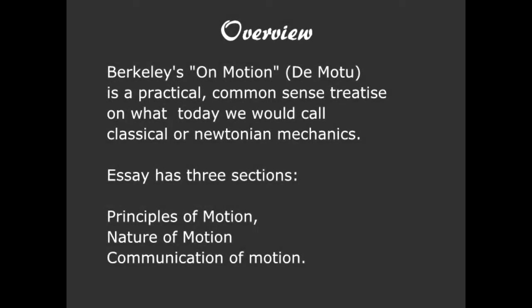George Berkeley's On Motion is a practical common sense treatise on what today we would call classical or Newtonian mechanics. The essay has three sections: the principles, the nature, and the communication of motion.